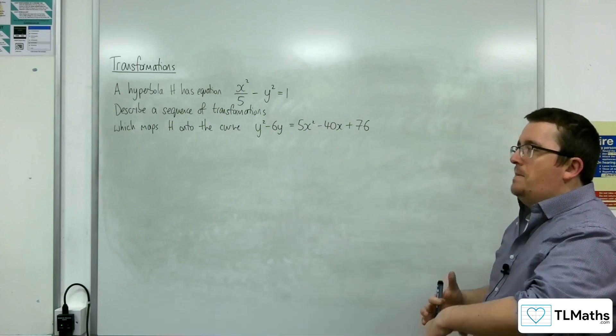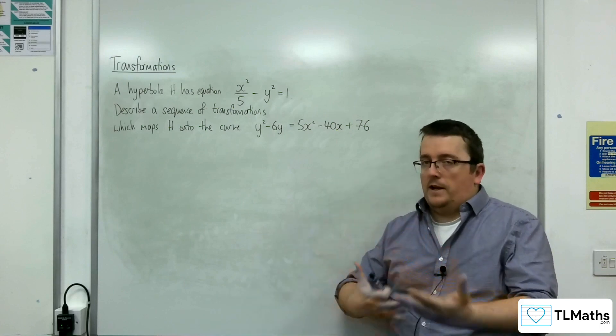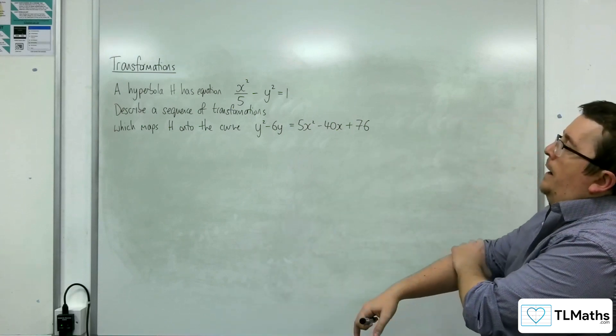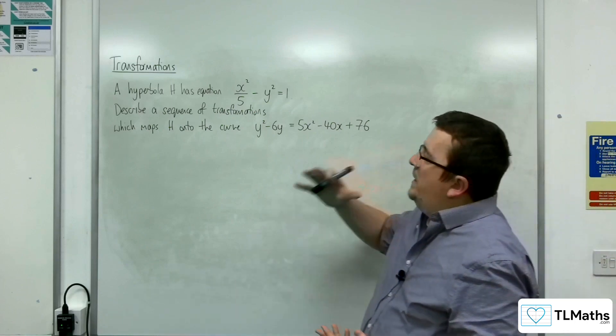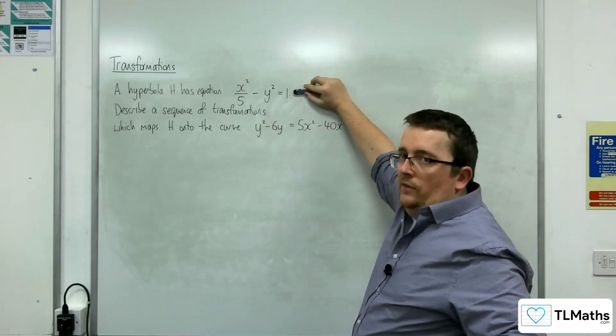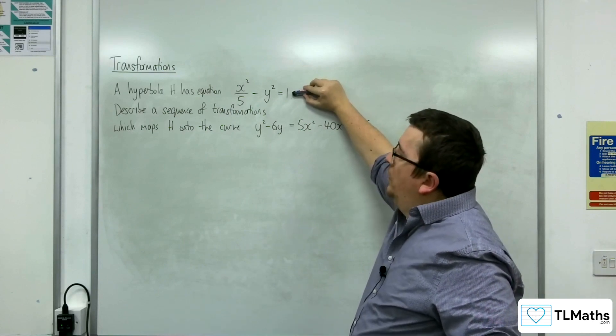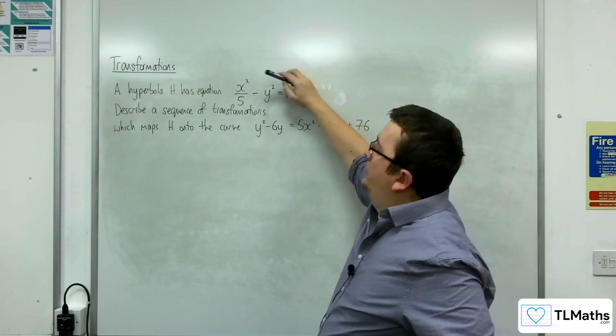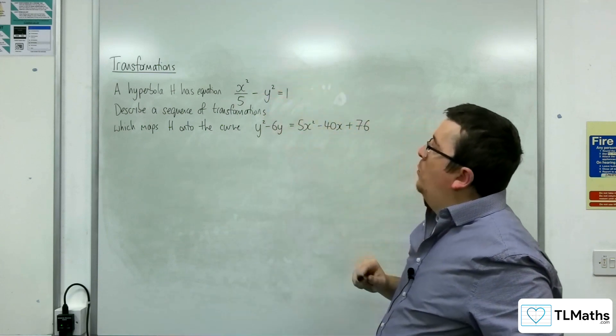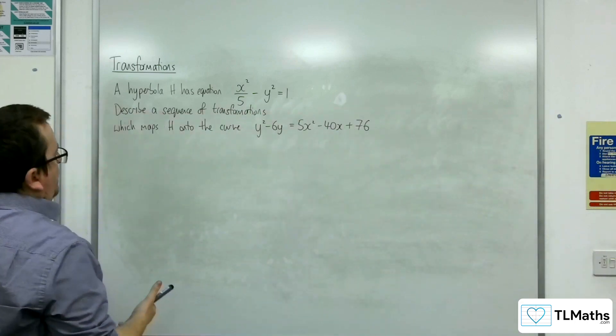Now, there may well be more than one way of doing this and describing the transformation. So what we want to do is we really want to get it into this format. If we can get 1 on the right hand side, that would be the first thing. And we want x squared over 5 take away y squared. So let's see if we can get it into that form.